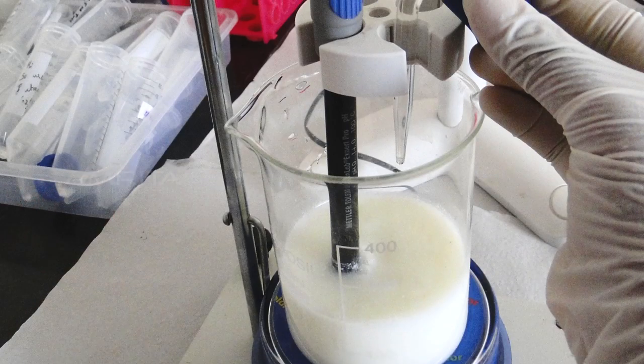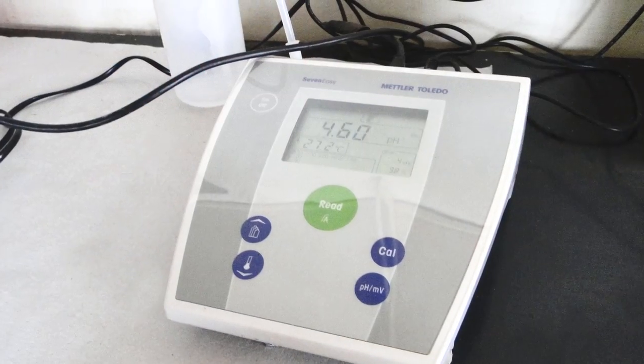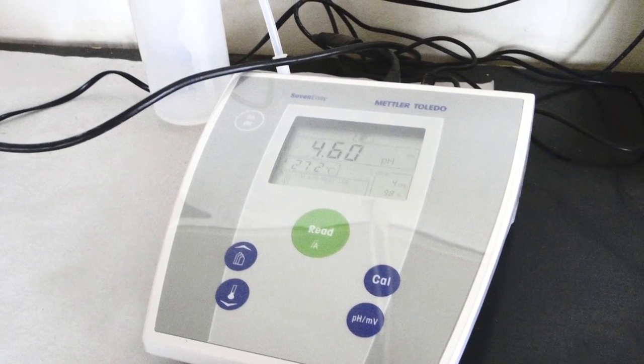While stirring the milk, add HCl drop by drop. Casein starts precipitating at a pH between 4.8 to 4.6.